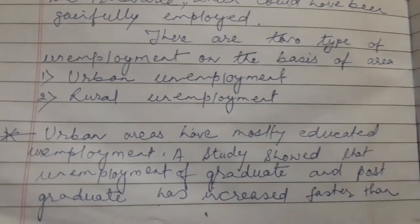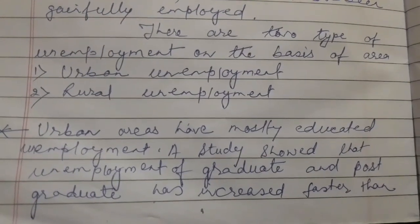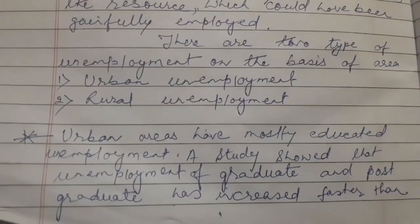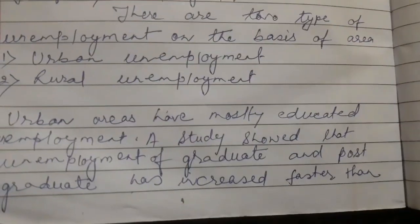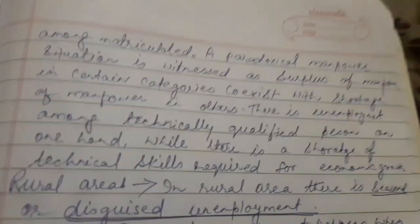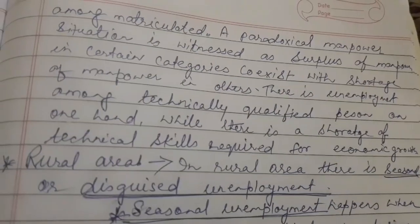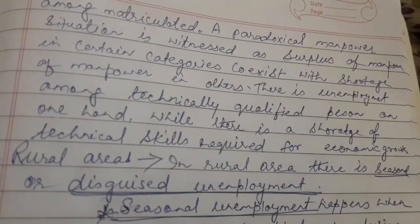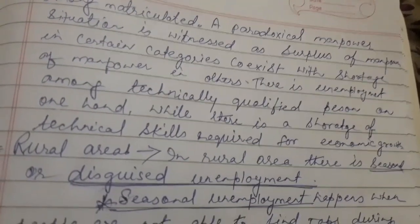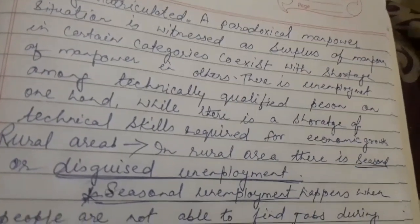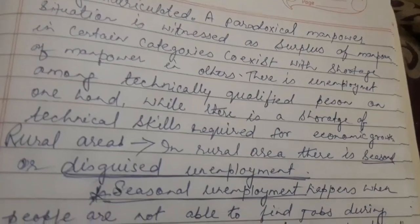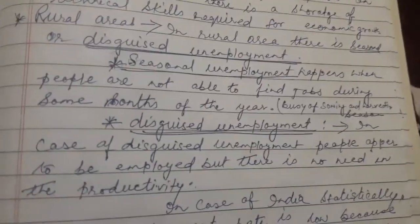In our society, there are two types of unemployment barriers: urban and rural. In urban areas, a paradoxical situation is created where in some particular areas many people are seeking work, but in other areas there is a scarcity of labor and people are not able to find workers. This reflects the nature of our society and our country.